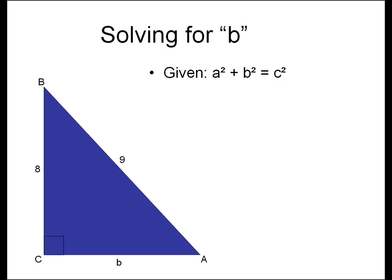Use the triangle below to solve for B. Given that A squared plus B squared equals C squared. 8 squared plus B squared equals 9 squared. 8 squared equals 64 and 9 squared equals 81. 64 plus B squared equals 81.